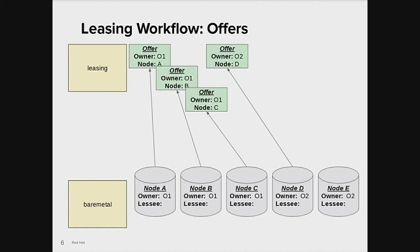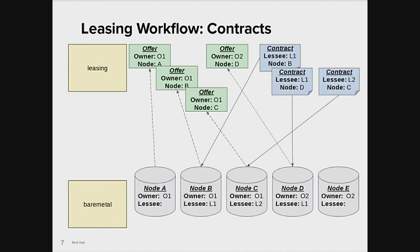However, O2 is using node E, so they keep it for themselves. Now the lessee is coming into play. Lessee L1 wants to use two nodes, so they look at the available offers and create a contract for nodes B and D. Lessee L2 only needs one node, so they create a contract for node C. No one creates a contract for node A, so another lessee can take it. And no one can create a contract for node E, since it was never offered up in the leasing service.